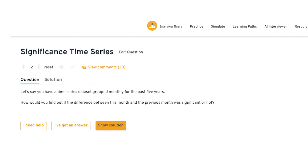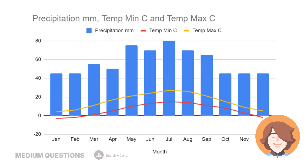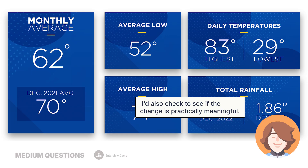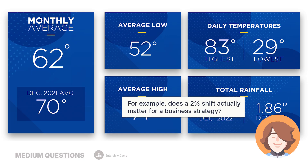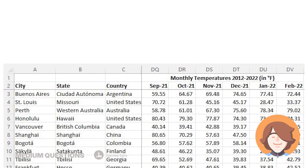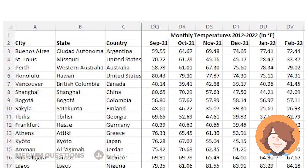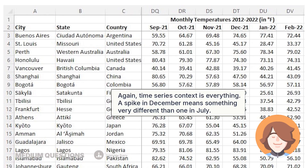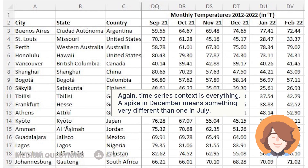How do you know if a month-to-month change in a time series is significant? I start by quantifying the change between this month and the previous month — maybe using a difference in means or proportions depending on the metric. Then I test whether that change is statistically significant using a paired t-test or a time series-specific method like ARIMA residuals. But stats aren't really enough — I'd also check if the change is practically meaningful. For example, does a 2% shift actually matter for business strategy? I'd look for seasonality trends that might explain the change and avoid jumping to conclusions from short-term noise. A spike in December means something very different than one in July.